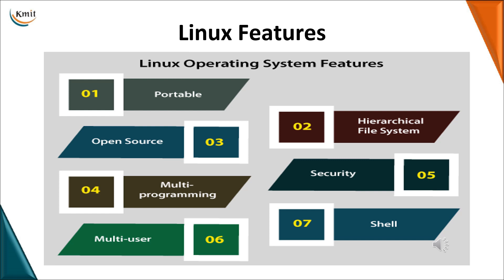Moving on to the basic features of Linux. The first and foremost feature is portability. When building an operating system, you don't want it to work only on a single system configuration. You want it to be usable on any type of hardware device or any system configuration. Portability means you can use this operating system with any kind of hardware connected to the system or any type of configuration.